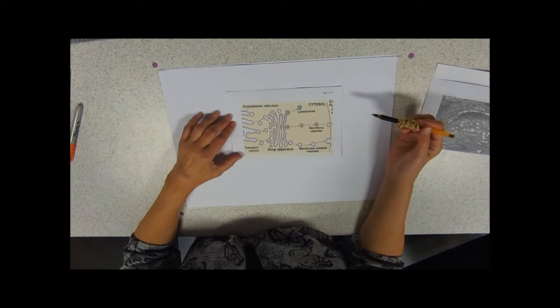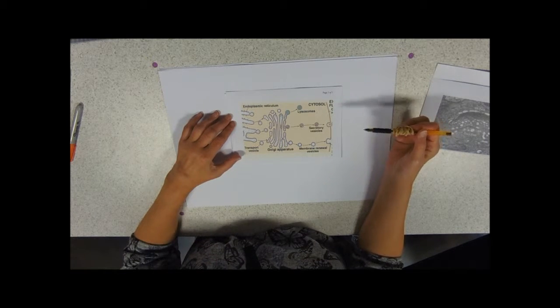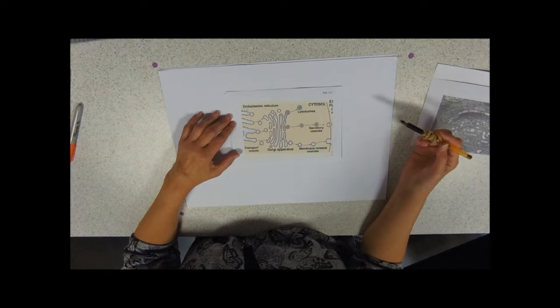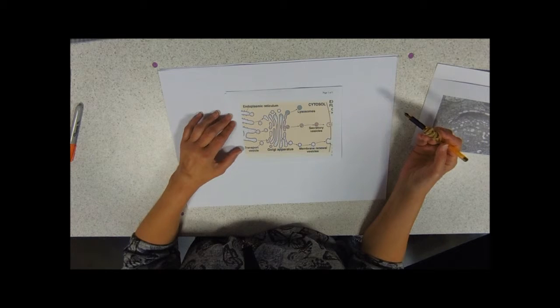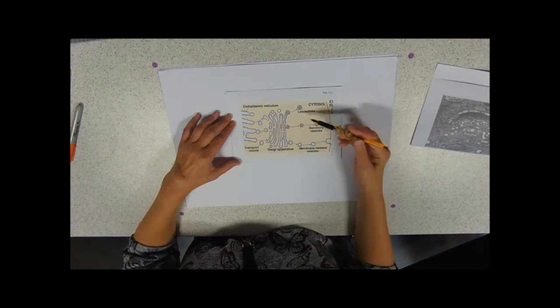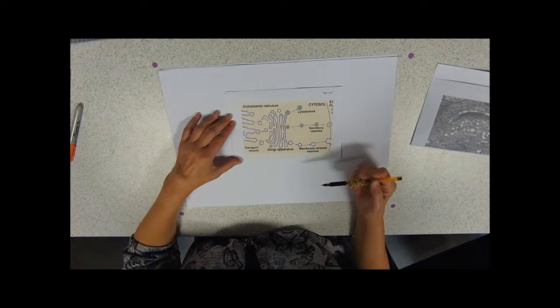And package it all up into little vesicles, which is why they're surrounded by vesicles, to do the function of the vesicle. That complicates it a bit because you've got three sorts of vesicle here.